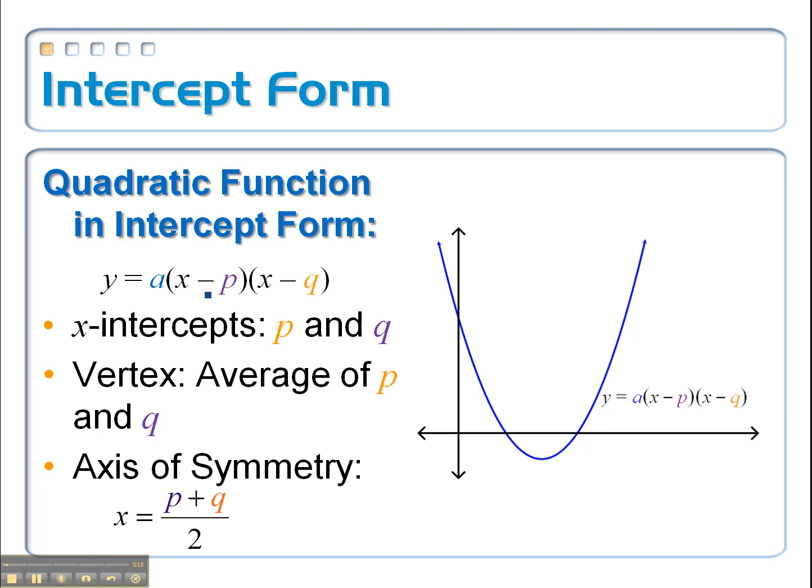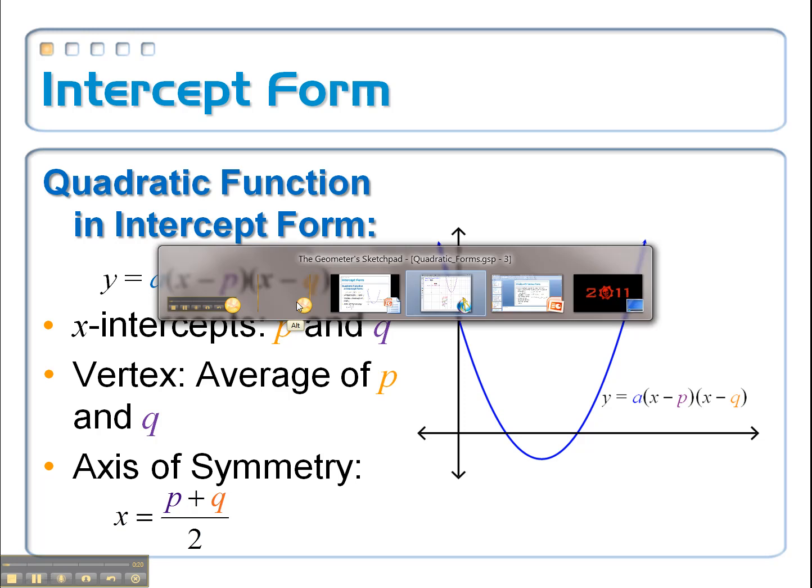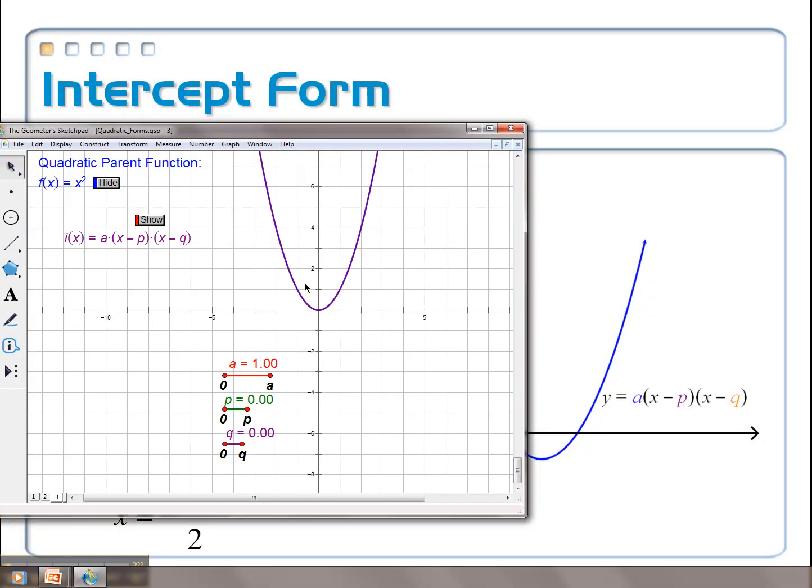Now, let's take a look at what the a, the p, and the q do on Sketchpad here. So I've got my regular parent function graph, y equals x squared. And the purple one is the one that's in intercept form.